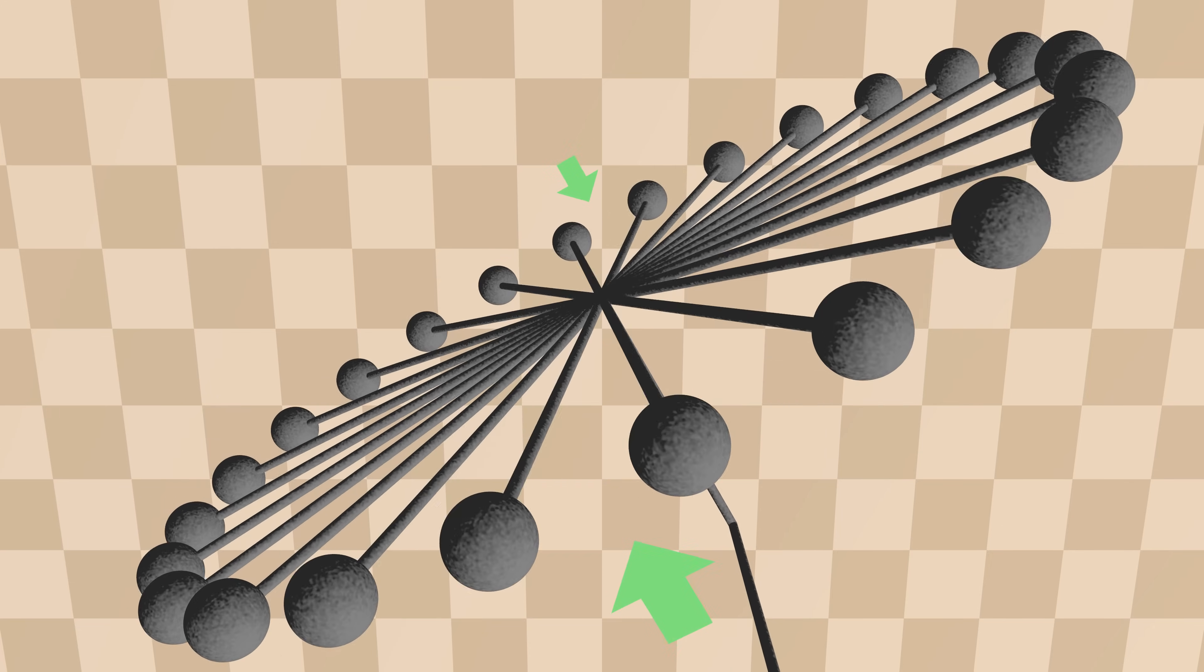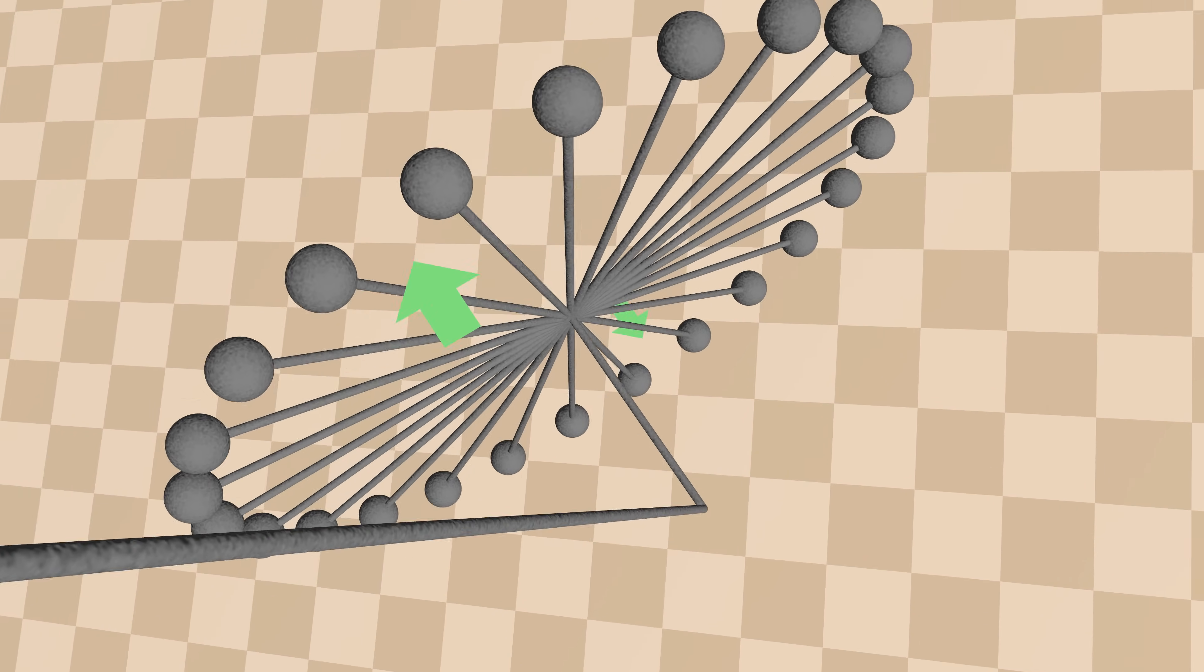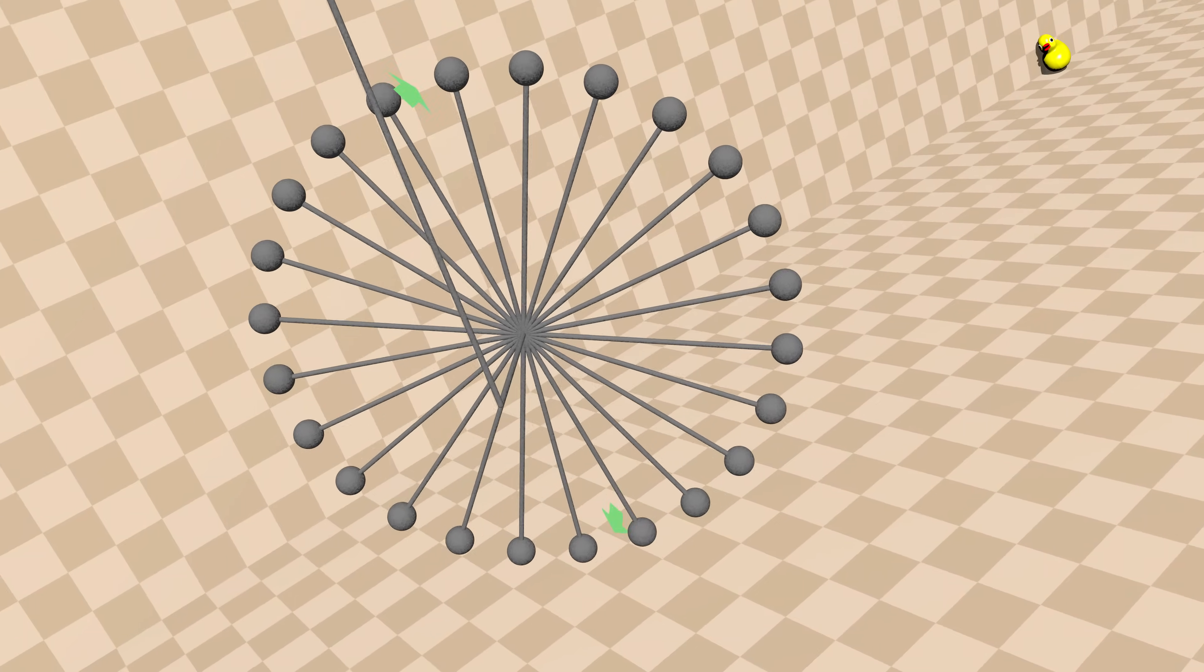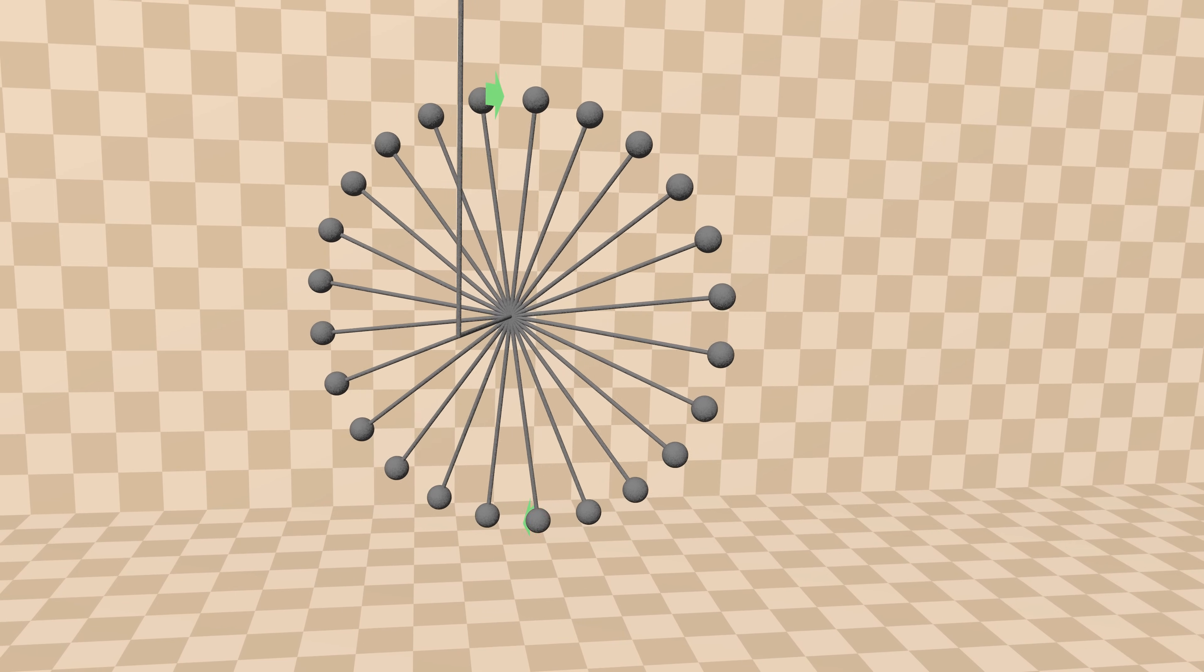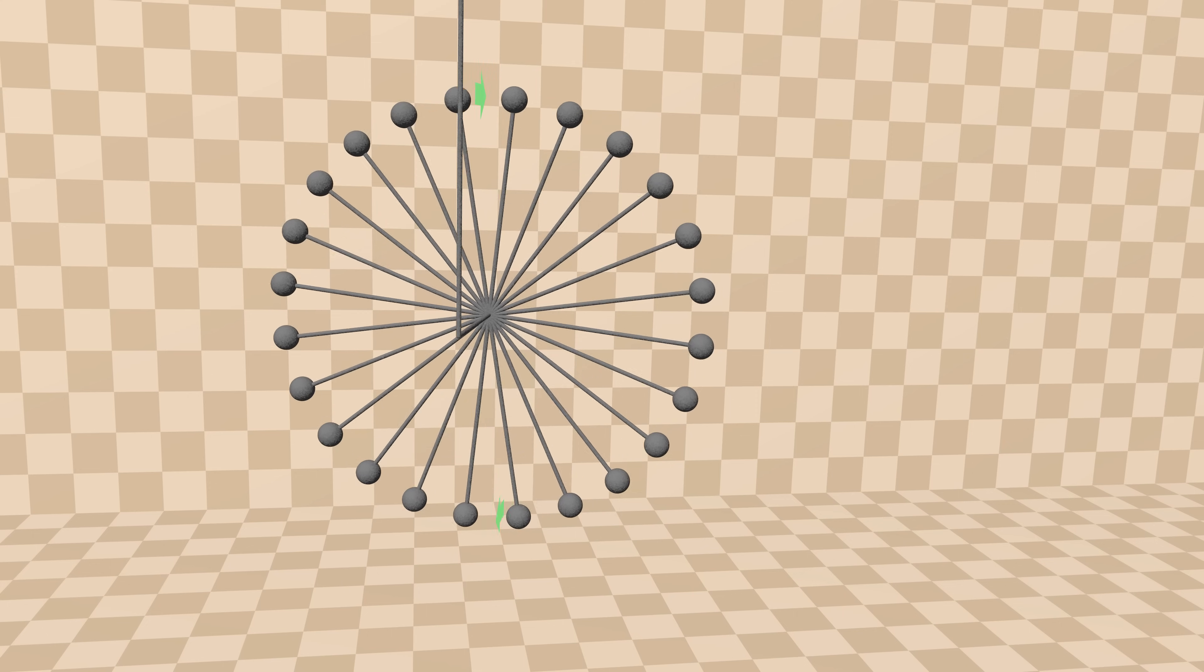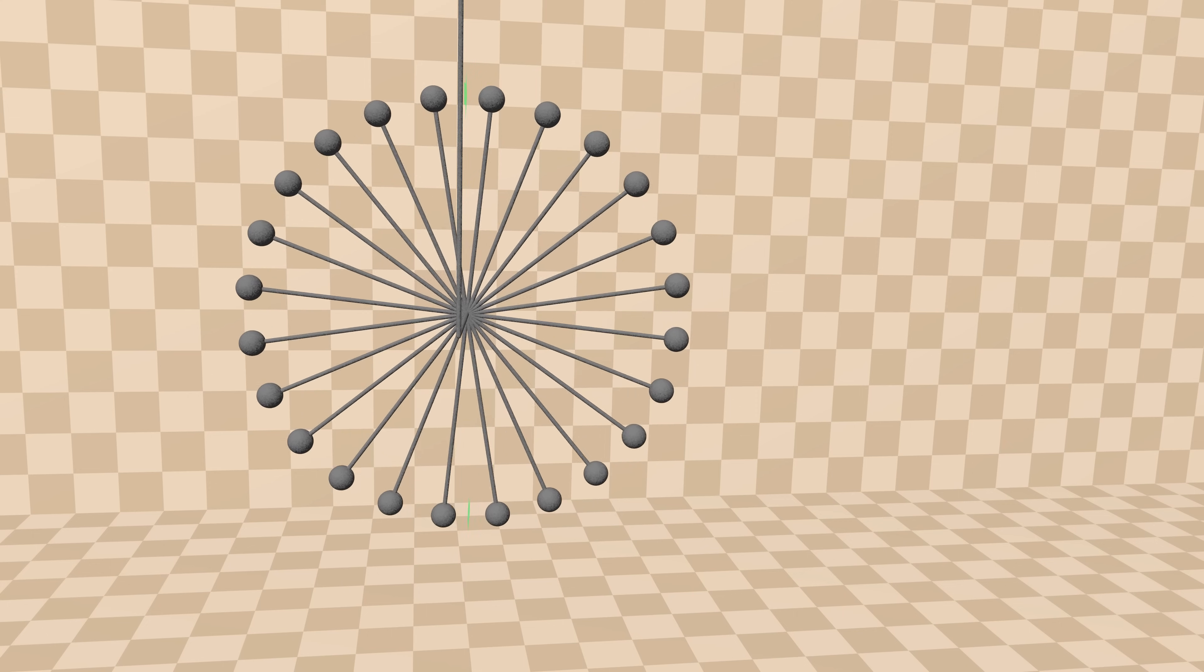Now of course, I've made some simplifying assumptions here. In reality, the torque is applied via the bearings in the hub of the bicycle wheel, rather than via magic force arrows, and the force is probably spread out around the hub rather than applied at just two points.